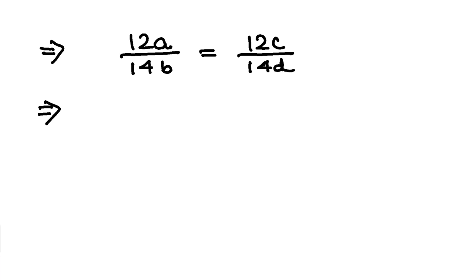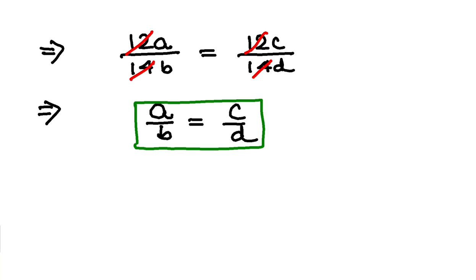Now from here, obviously I can cancel this 12 and 12 and 14 and 14 and I am left with a by b is equal to c by d. This is exactly what you needed to prove, alright.